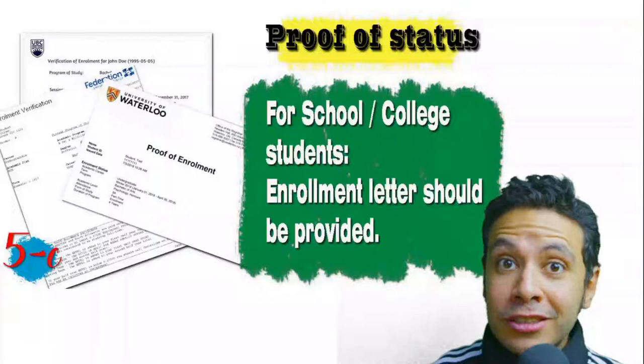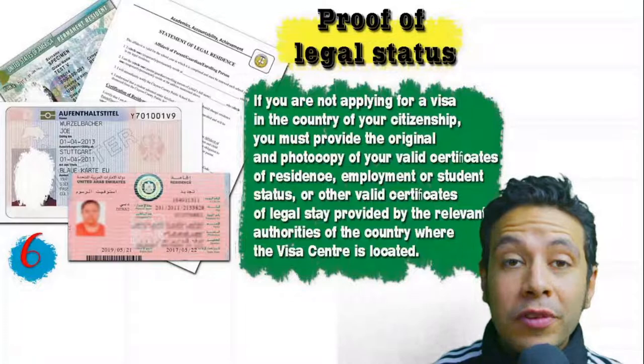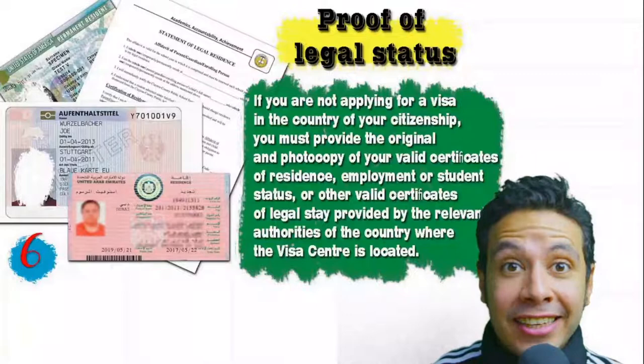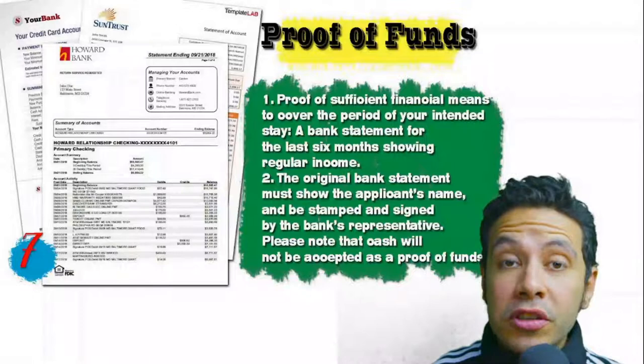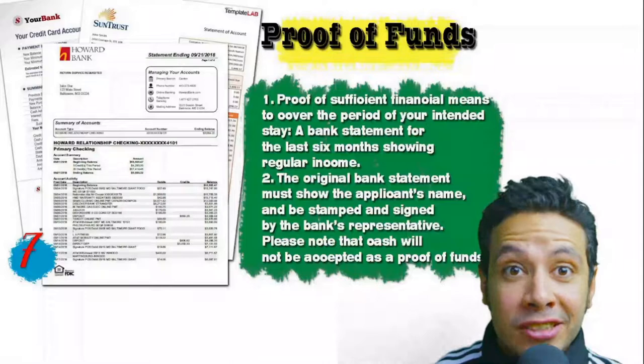If you are applying from a country other than your own, you will need to provide proof of legal status — a certificate of legal residence, and in some cases a valid residence visa for that country may also be accepted. You will also need to provide proof of sufficient funds: a bank statement showing your balance for at least six months, with your name, signed and stamped by a bank representative. Cash is not accepted as proof of funds.